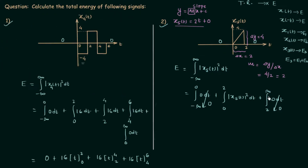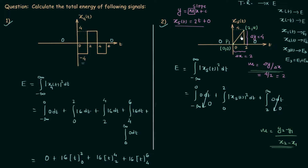A second way to find the slope uses (y2 − y1)/(x2 − x1). The coordinates of the two points on the line are (0, 0) at the origin and (2, 4) at the endpoint. So the slope = (4 − 0)/(2 − 0) = 2, confirming X5(t) = 2t. Both methods give the same result.